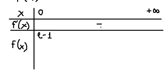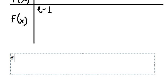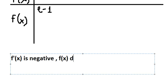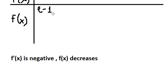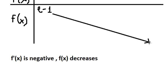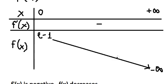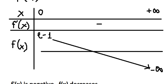Because the first derivative is negative, that means the function is always decreasing on this interval. So the function should look like this — decreasing and crossing the x-axis somewhere in this region.